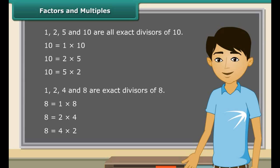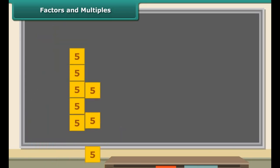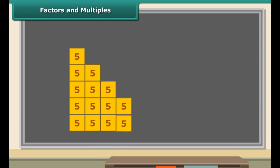Multiples are always greater than or at least equal to the number itself. Let us revise factors and multiples with the help of an interesting activity. Collect some wooden strips each 5 units long, then join them end to end as shown in the figure. It is clear from the figure that the numbers 5, 10, 15, 20, and 25 are multiples of 5.